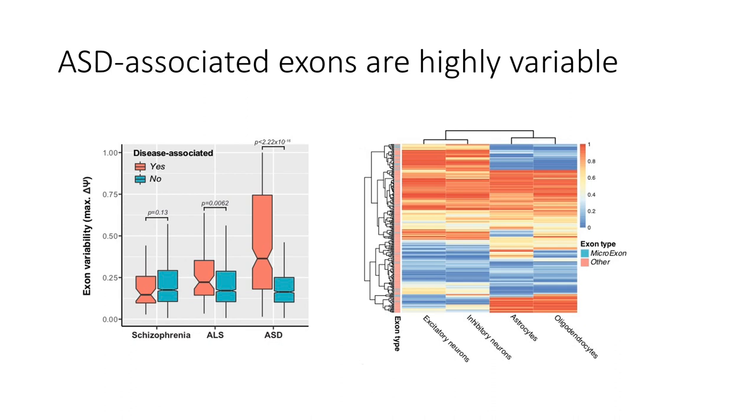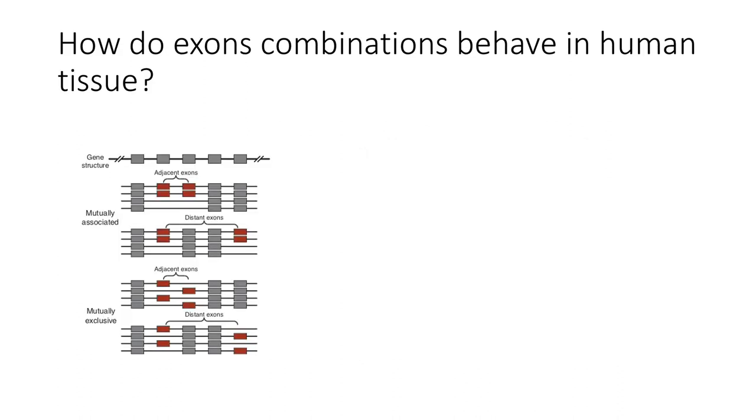This is just a heat map showing that same information. And this is important because if you were to try and sort for say astrocytes and look for ASD specific markers that would be an okay thing to do, but if you were to try and look for astrocyte specific things and ALS or schizophrenia that would kind of be an exercise in futility.